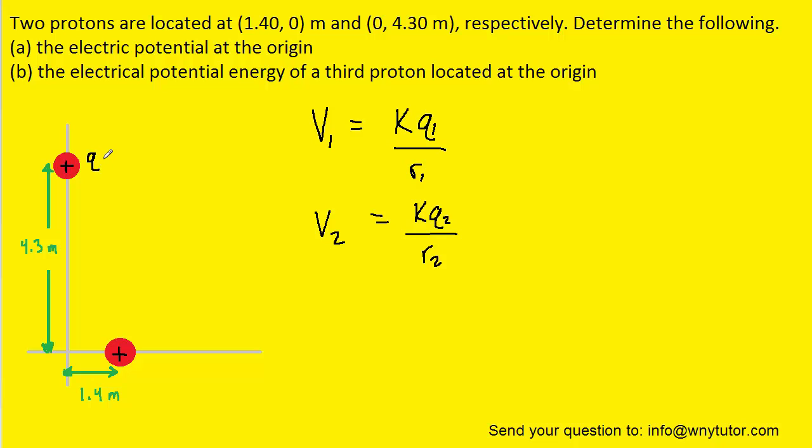And perhaps we can call the charge here q1 and then the charge over here q2. Now these charges are both protons, so that means the charge is equal to 1.6 times 10 to the negative 19th Coulomb. So we're going to plug that in for q1 and q2. And then r is simply the distance from each proton to the origin. So we'll plug those respective distances as well.